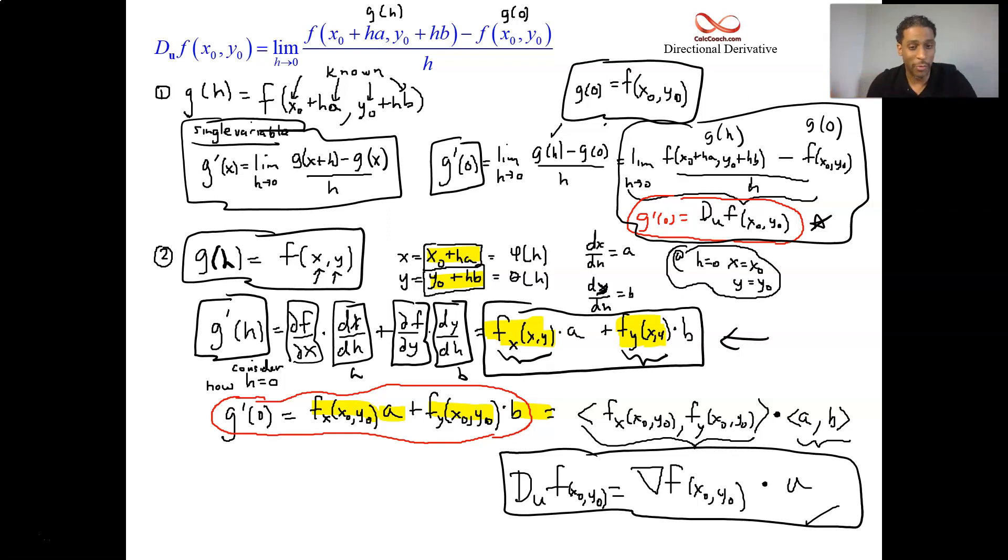And that can be recast as a dot product, where you take the fx at x naught y naught and the fy at x naught y naught, and you dot it with the a, b. And so g prime of zero, on the one hand, is a directional derivative. g prime of zero, on the other hand, is this dot product. And so that's the reasoning behind why we won't use the limit, the definition limit. We will use this dot product. It's okay if you didn't follow that. I don't think I did the best job doing it. I tried, though. And so there we go.